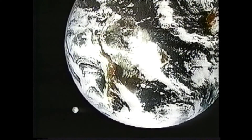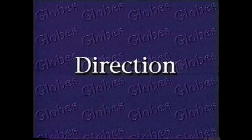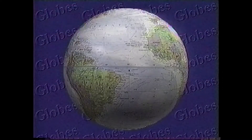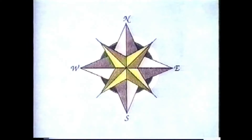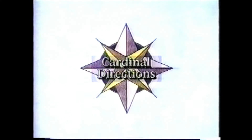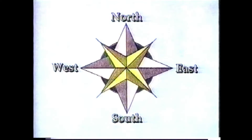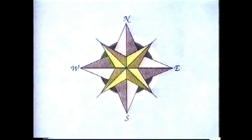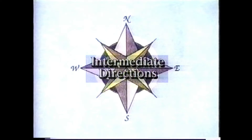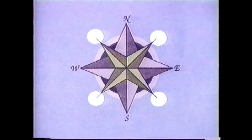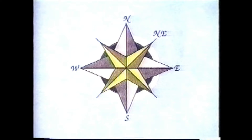Now that you have a basic understanding of scale, let's talk about direction. Globes use the same directions that you're used to using with maps. The cardinal directions are north, south, east, and west. The first letter of each direction is often used instead of the whole word. We also use intermediate directions, which are those between the cardinal directions, such as northeast, southeast, southwest, and northwest.